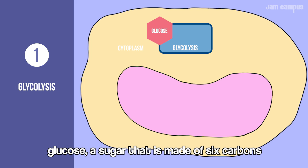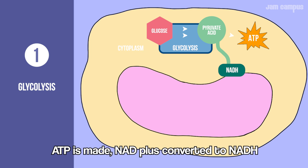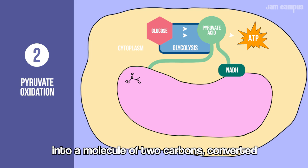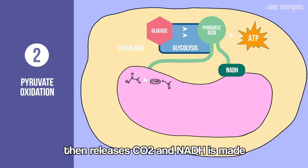First stage: glycolysis in the cytoplasm. Glucose is a sugar made of 6 carbons. It is converted to 2 molecules of pyruvate. ATP is made, and NAD+ is converted to NADH.